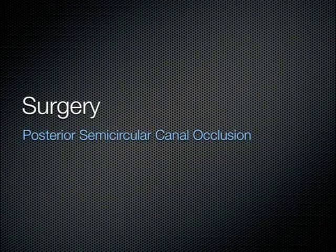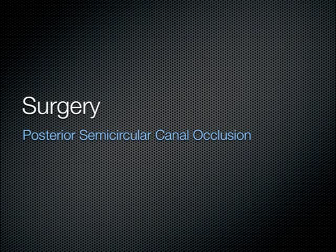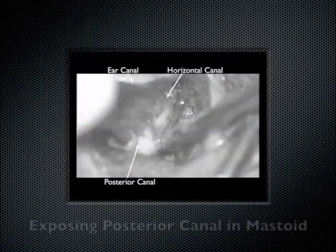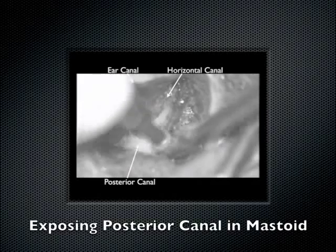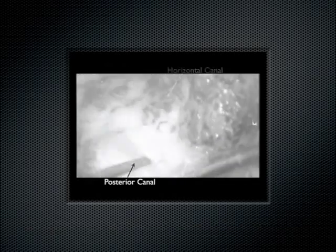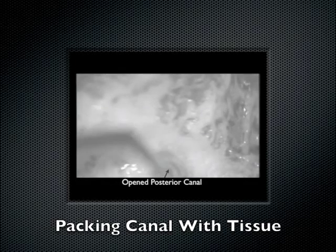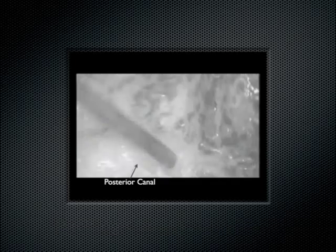For the rare cases of BPPV that don't resolve with office treatment, surgery may be offered. Surgery is elective and should only be done when symptoms have continued so long or recur so frequently that normal activities are significantly disrupted. Obstructing the canal prevents particles from entering the canal from the utricle and prevents movement of the sail-like cupula of the semicircular canal.